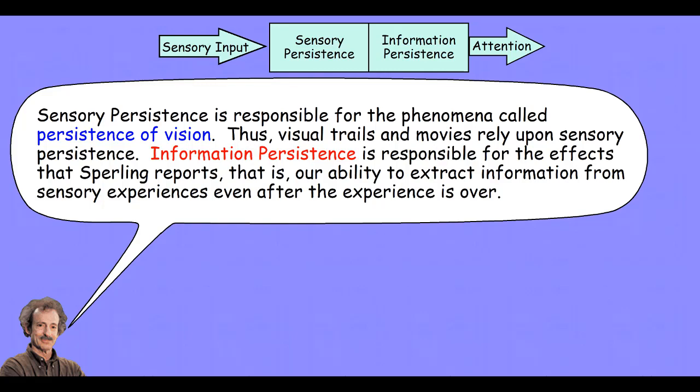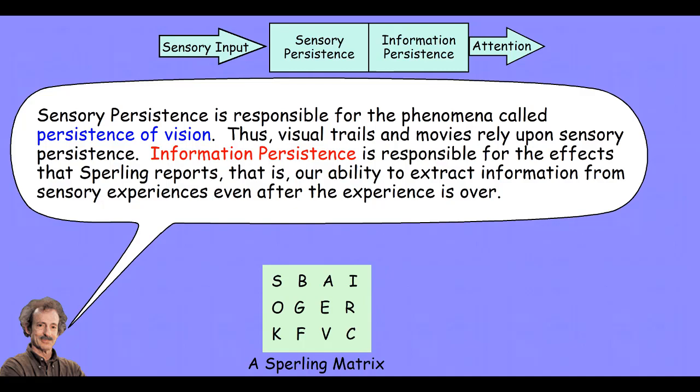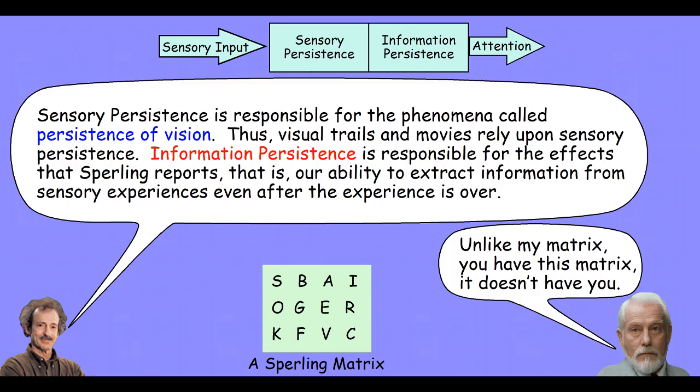Sperling did this in a number of experiments involving what's now called the Sperling matrix — nothing like the matrix from the movies. It's just a matrix of letters, usually three rows with three or four letters in each row. George Sperling was a cognitive psychologist, and through several experiments he was able to prove his hypothesis that human beings store a perfect image of the visual world for a brief moment before it's discarded from memory.